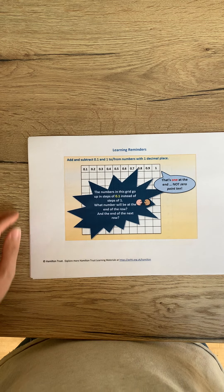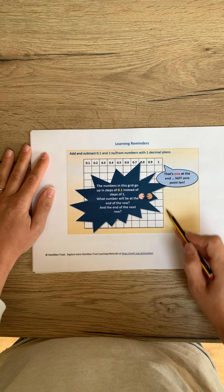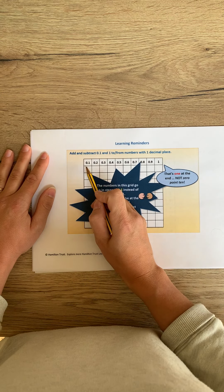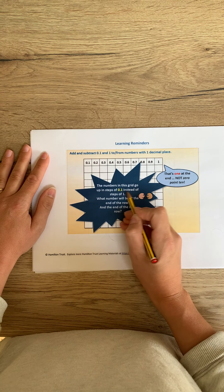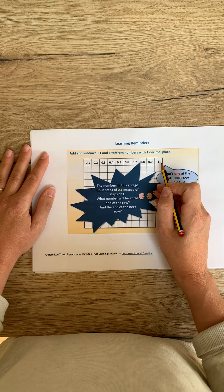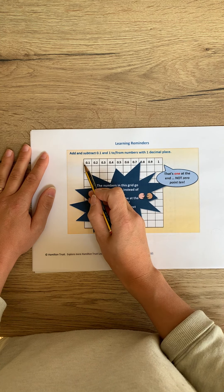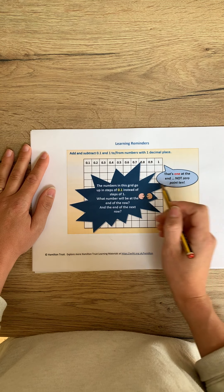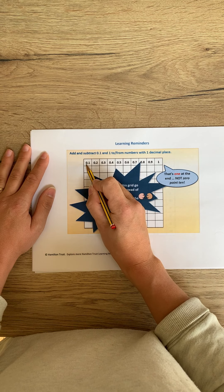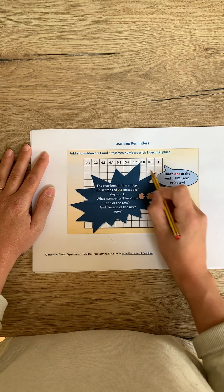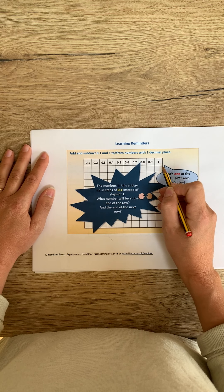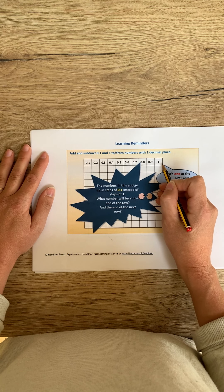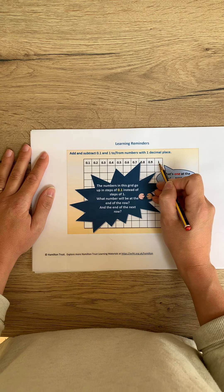So, learning reminders. You can see in the background here we have a number square, and this number grid goes up in steps of 0.1 instead of steps of one. Normally we would see a one-to-100 number square going up in whole numbers of one, but for this one we're going up in steps of 0.1, as you can see along the top line. Pay particular attention to the end here — when we get to 0.9, the next number is one, the whole number one. It is not 0.10.